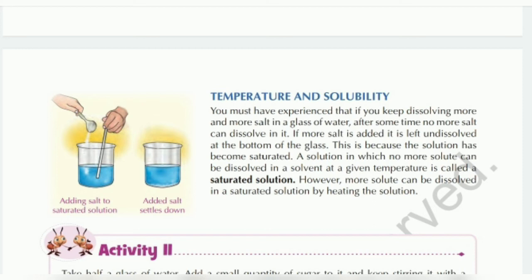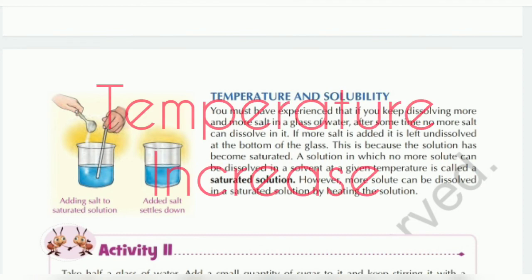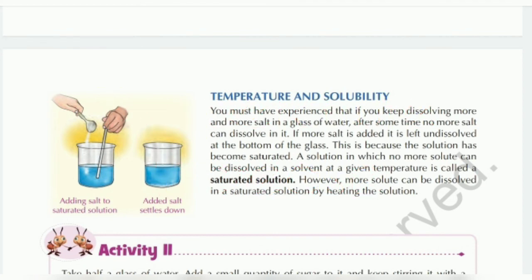That particular point is when we say the solution has become saturated. At that point, no more solute can be mixed in. That is a saturated solution — where the maximum amount of salt or solute has dissolved and no more can dissolve under that given temperature. If you still want to dissolve more, you have to heat the solution — increasing the temperature will allow the salt to dissolve again. So a saturated solution means maximum solute has dissolved at a given temperature.